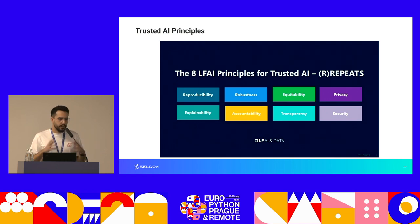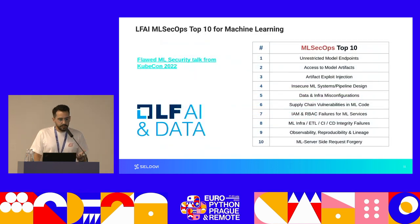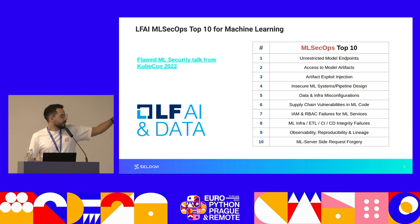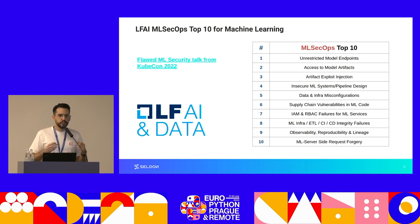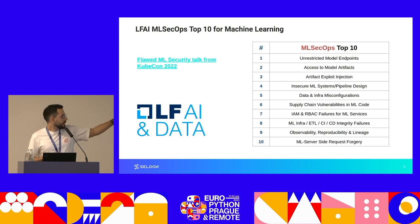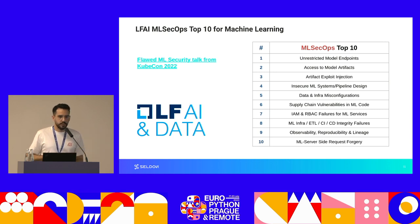The LFAI has established an ML SecOps working group as part of its effort to focus on security. Part of what they have done so far is publish a top 10 list of vulnerabilities that machine learning engineers, data scientists, and MLOps engineers should care about. Today we're going to be talking about number three and number six from that list. If you're interested in the others, you can check out a link to our previous talk covering each point in more detail.